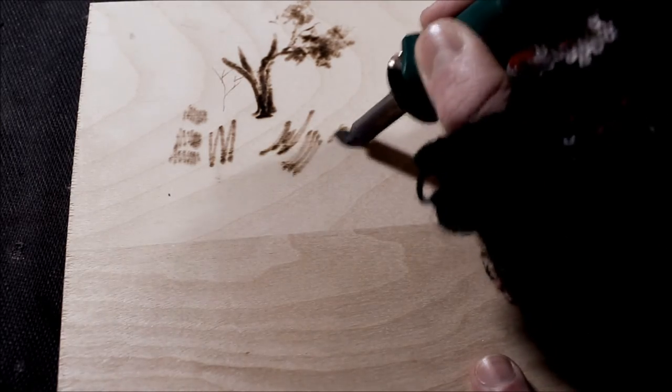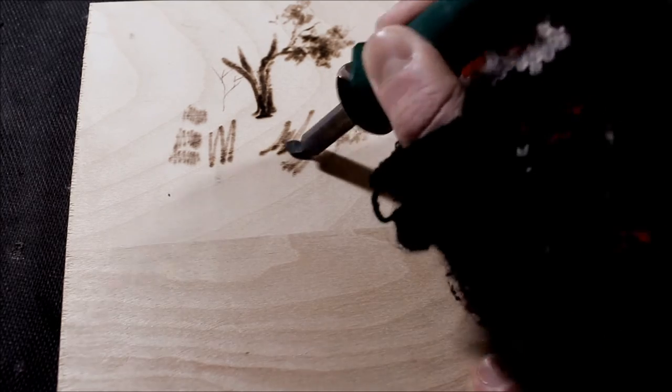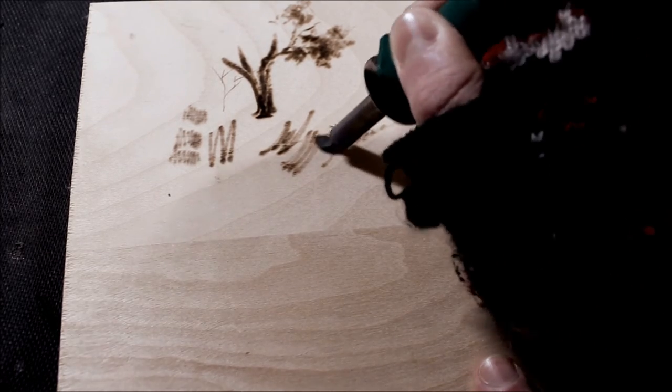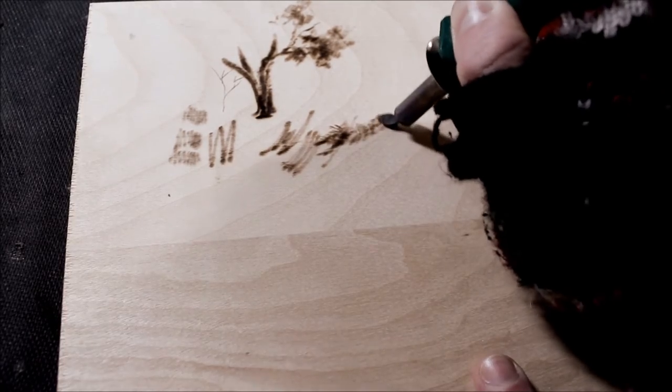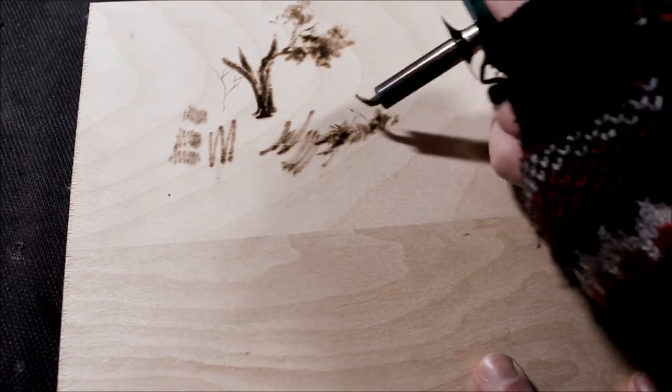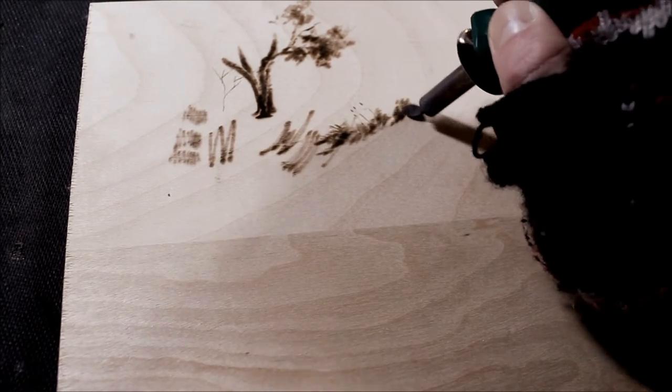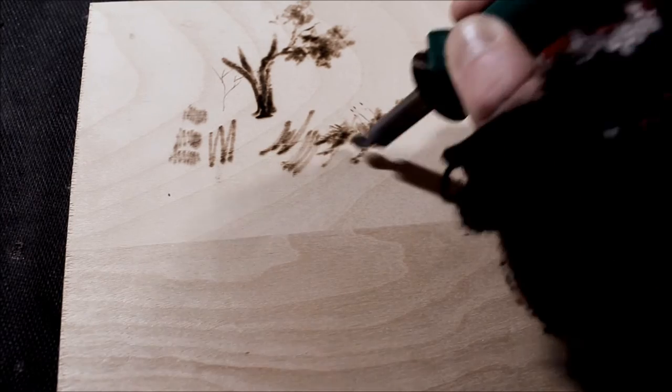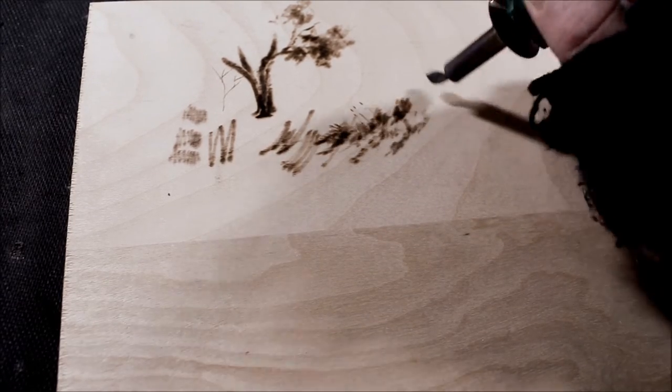It's an up-and-down stroke. You can use the side to create some thinner and darker blades of grass, some shadows. Pull up some grass. So here it's a combination of zigzags and up and downs and little circles.